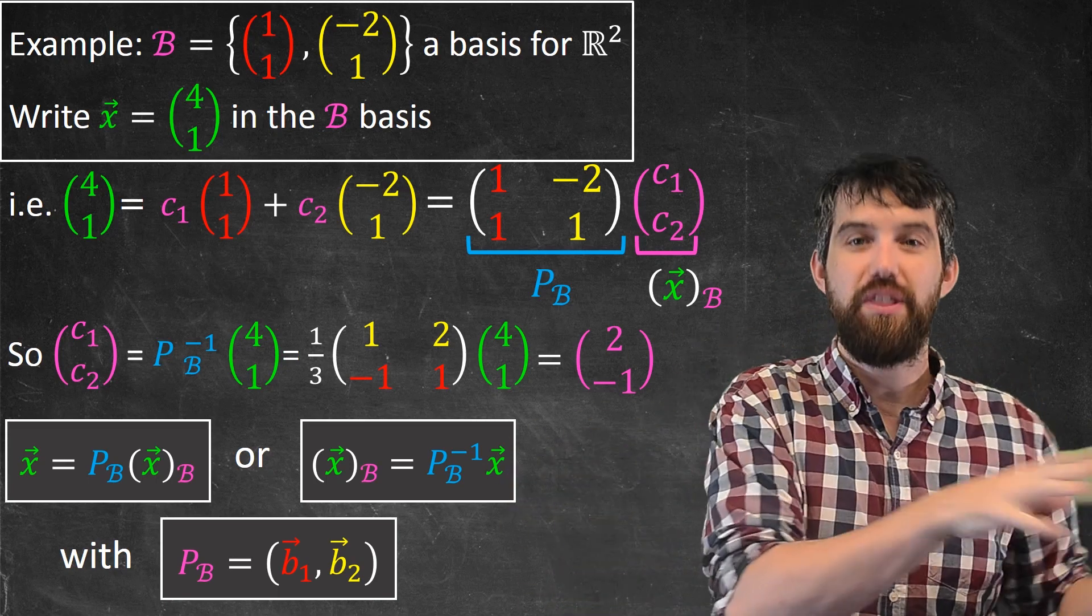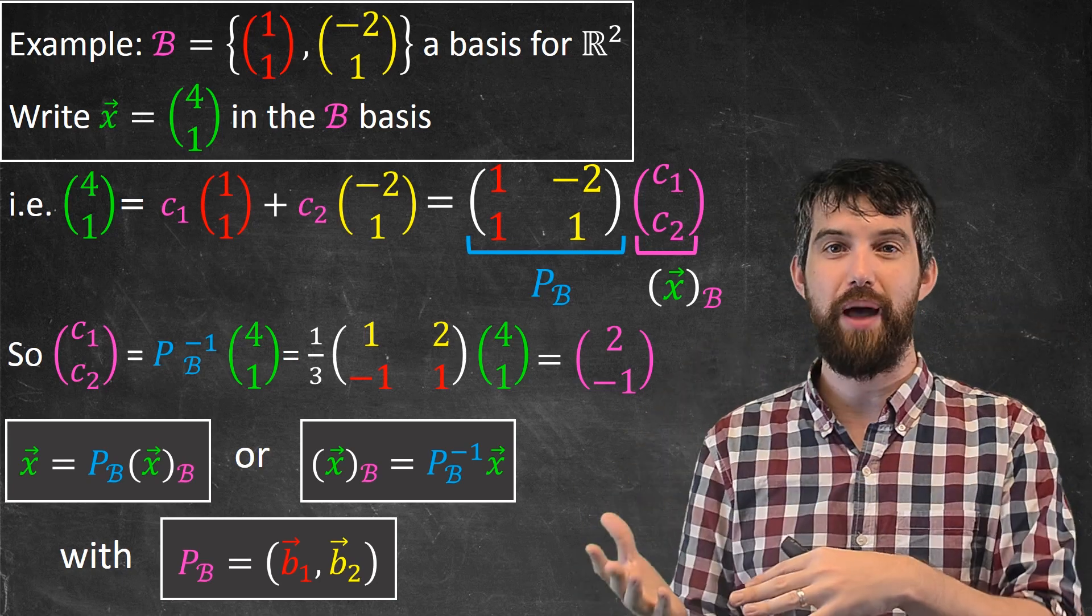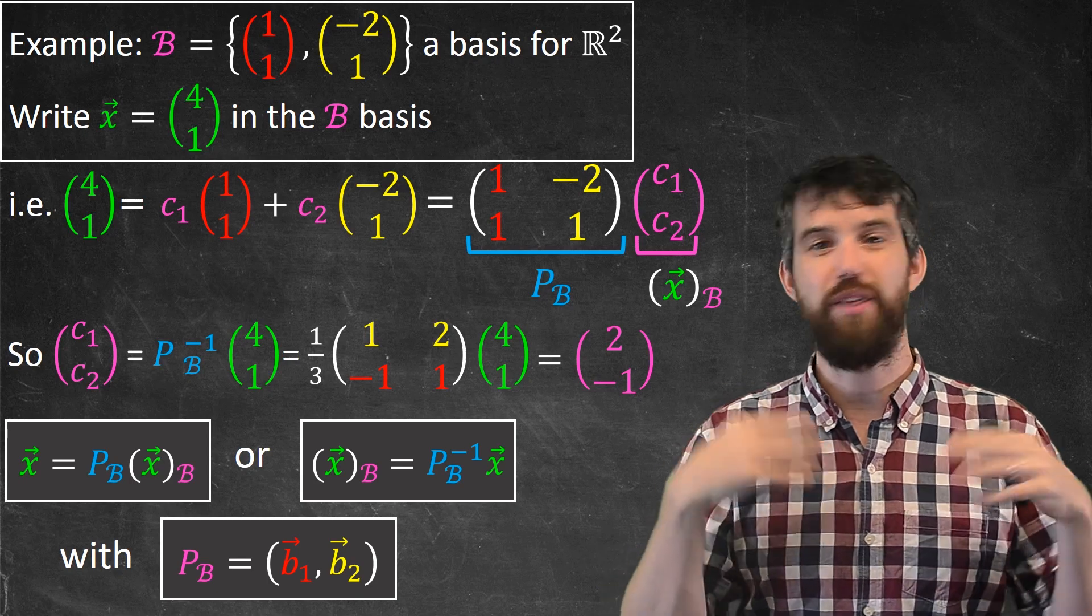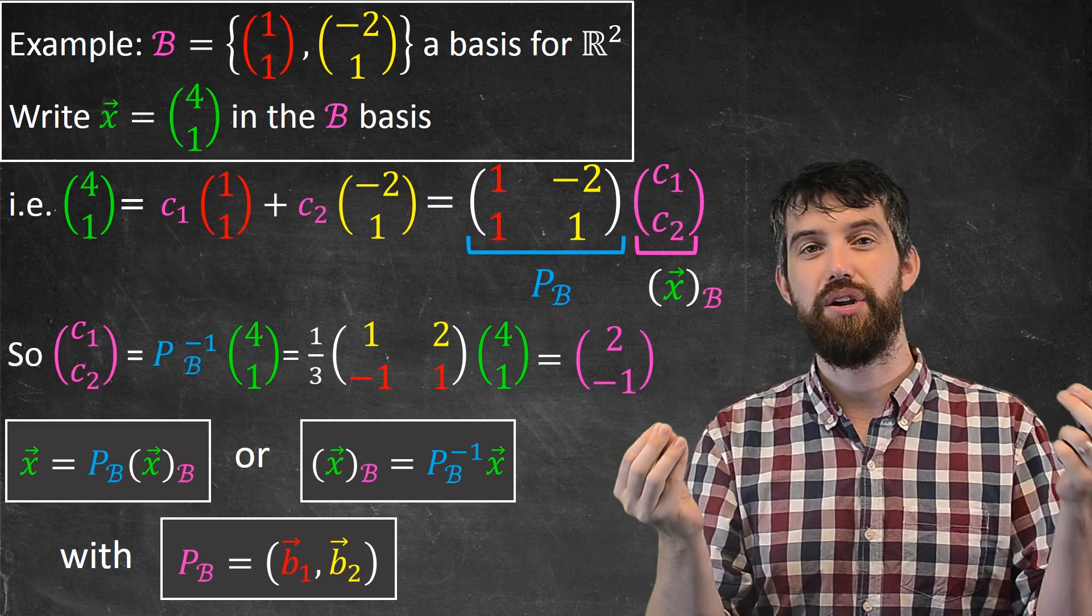Or, to flip it around the other way, x written in the B basis can be the inverse of this P_B matrix multiplied by x, where the P_B matrix just has the first and second basis vectors as the first and second column.